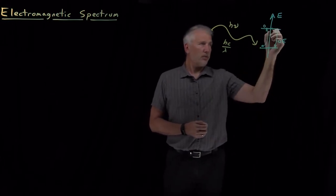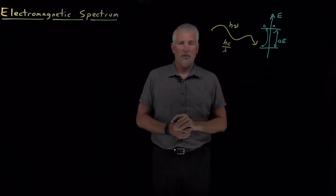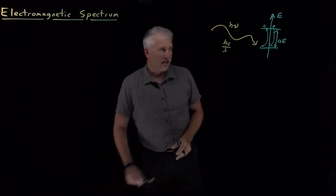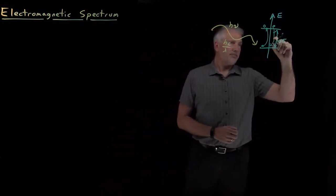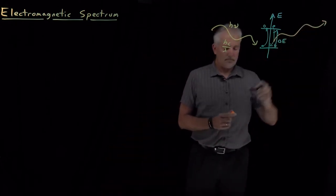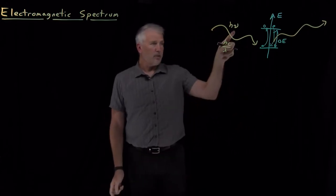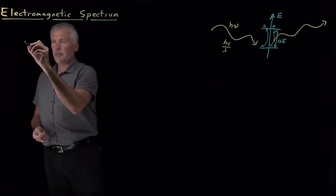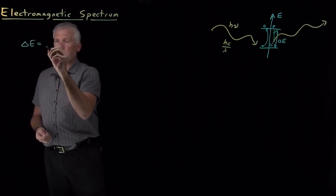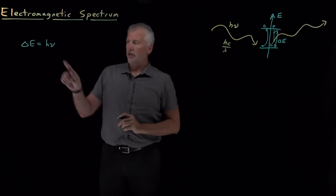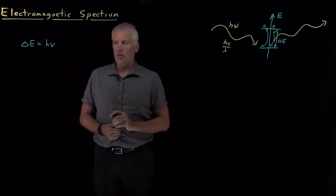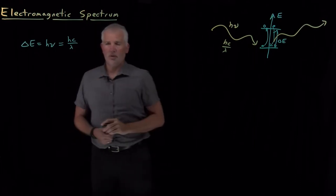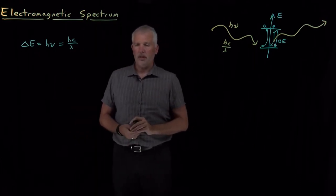Or, contrariwise, if the system is in the upper state and it falls down to the lower state, losing this much energy, then it can produce a photon of that same frequency or wavelength. So what we know about spectroscopy is: the difference in energy between two states is equal to h times the frequency of a photon that gets generated or absorbed, equal to hc over lambda, where lambda is the wavelength of the photon that gets created or absorbed.